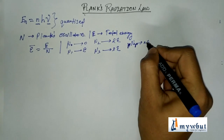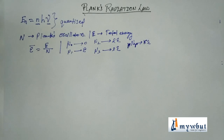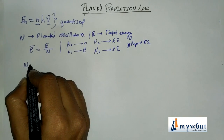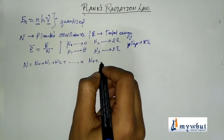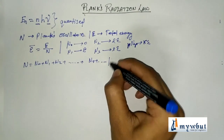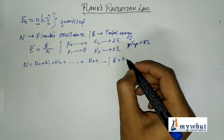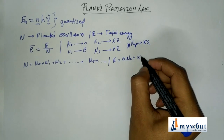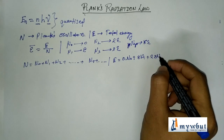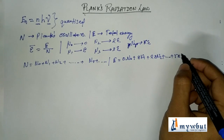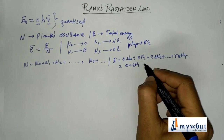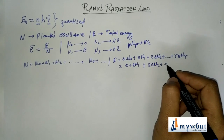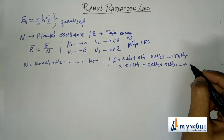Similarly, the total energy E = 0·N₀ + ε·N₁ + 2ε·N₂ + 3ε·N₃ + ... + R·ε·N_R.